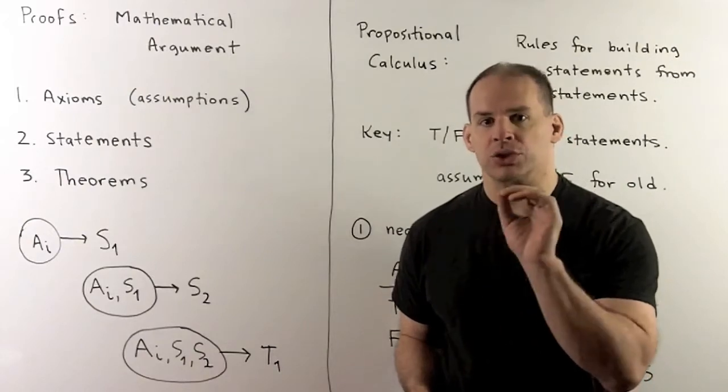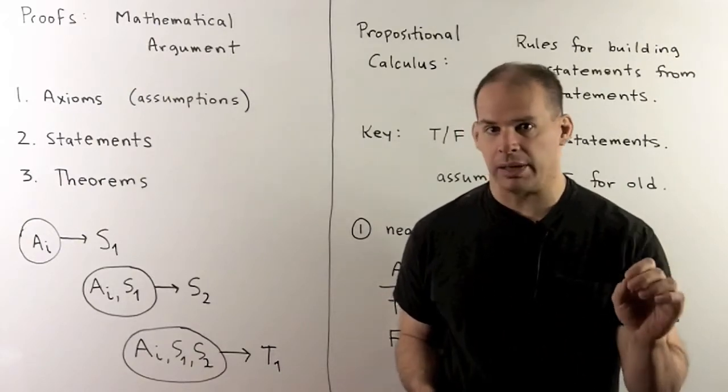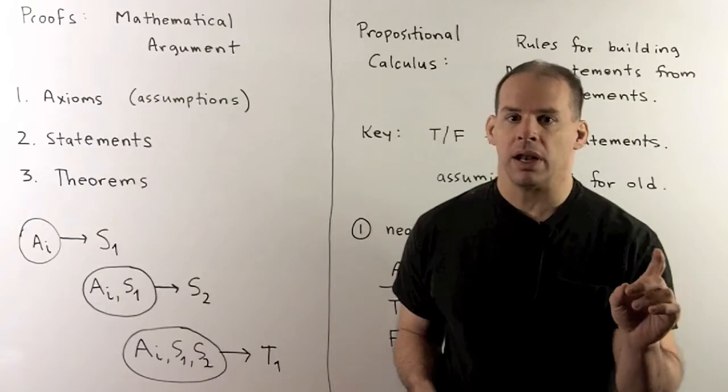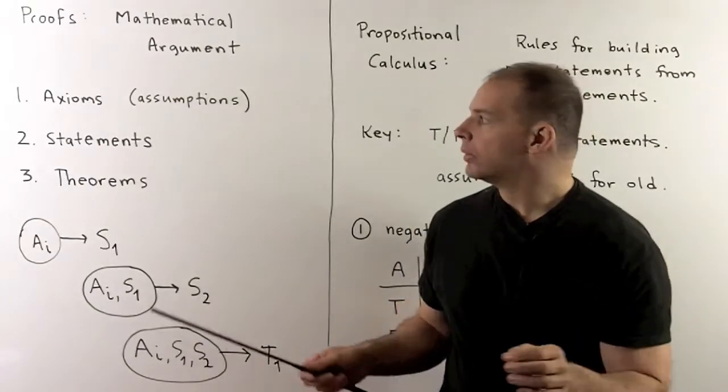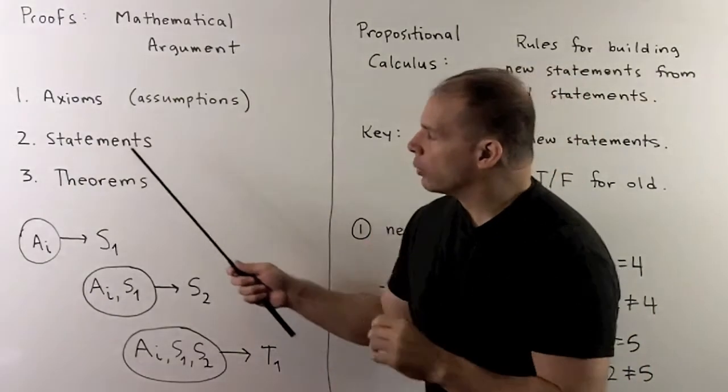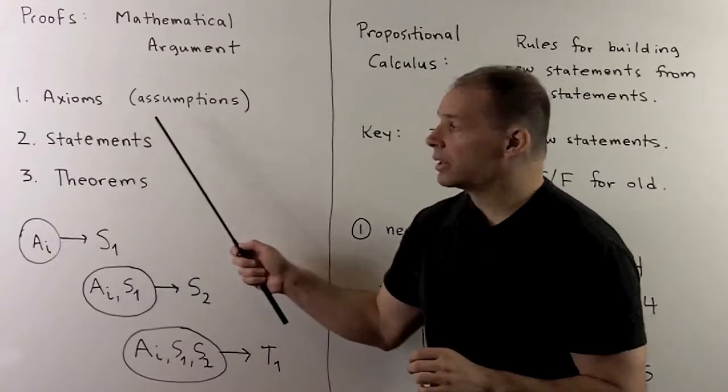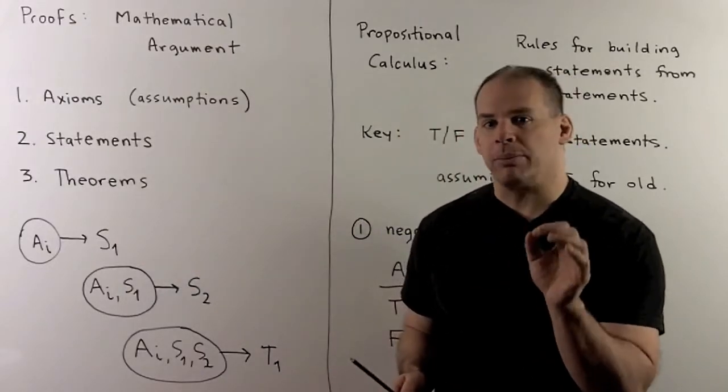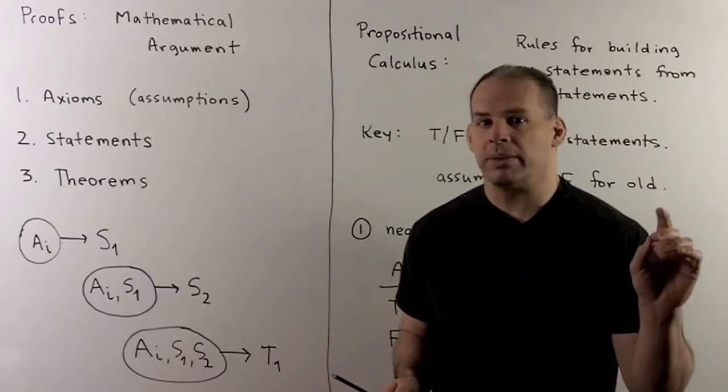So, proof is a story told using mathematical statements. Now, for an overview, in a proof, we'll start with axioms. So, these are going to be the mathematical statements that we assume from the outset.